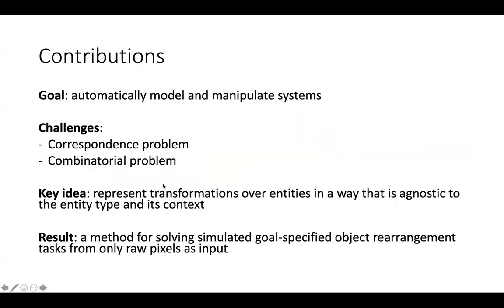To conclude, our goal is to build towards an agent that can automatically model and manipulate systems. A solution to this problem needs to solve the correspondence problem of representing entities internally in a way that corresponds to objects in the external environment, as well as the combinatorial problem of representing transformations on these entities in a way that can be reused across different contexts. Our key idea is to explicitly factorize each entity representation into its type and state, and cache previously encountered transformations as only a function of the state. This enables us to develop a planning and control algorithm that retrieves previously encountered transformations for solving novel rearrangement problems, enabling us to generalize to novel object configurations and novel numbers of objects significantly better than state-of-the-art offline and model-based reinforcement learning methods.